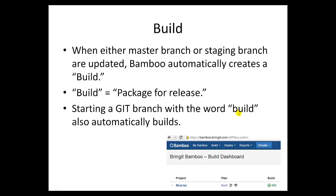Currently, when the master branch is updated, that triggers a build. A build equals a package for release — everything is put together in one location and prepared to be pushed to a production server. Not just master, but if you start any branch with the word 'build', this also causes Bamboo to trigger a build. This is the Bamboo server, and as you can see the plan — we called it build — it's been built properly. That's why there's a green checkbox here: we got a good build.